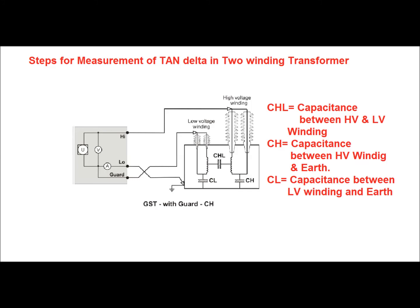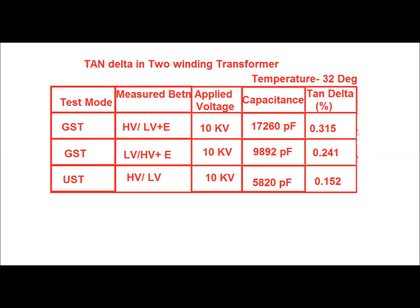The test results for the two-winding transformer capacitance and tan delta have been shown in this table. By GST mode, HV to earth capacitance value is 17,260 picofarads and tan delta is 0.315%. LV to earth is 9,892 picofarads and tan delta is 0.241%. Between HV to LV winding, the capacitance and tan delta are measured in UST mode. The applied voltage is 10 kV, the measured capacitance is 5,820 picofarads, and tan delta is 0.152%. Before measuring the tan delta test we have to record the voltage and temperature; here temperature is 32 degrees.